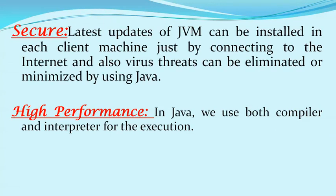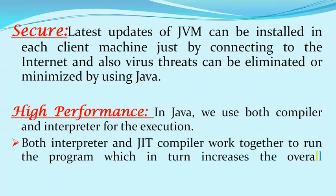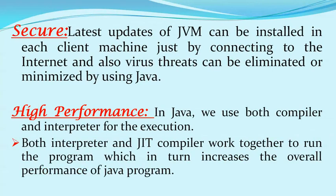The next feature is high performance. In Java, we use both a compiler and an interpreter for execution — the interpreter for single statements and the compiler for loop statements. Both the interpreter and the JIT compiler work together to run the program, which increases the overall performance of the Java program. JIT means Just-In-Time.